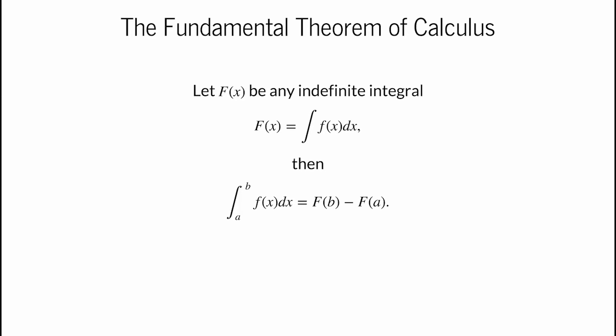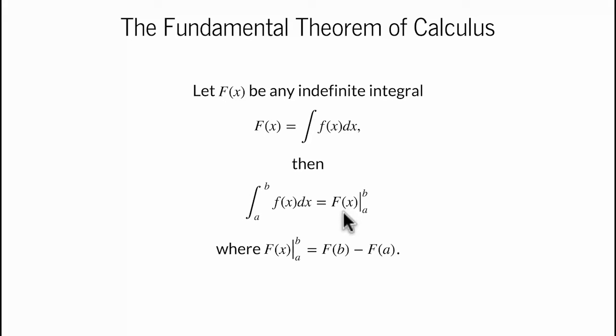We summarize the fundamental theorem of calculus as follows, using the variable x rather than t, as that is more standard. To compute the definite integral from a to b of f of x dx, you just need to find any antiderivative of little f of x, which we call big F of x. The definite integral is big F evaluated at the final point b, minus big F evaluated at the initial point a. Since F(b) minus F(a) occurs all the time when evaluating definite integrals, we introduce a shorthand notation: a vertical bar with the limits of integration a and b, so we'd say the definite integral of little f of x equals big F of b minus big F of a.